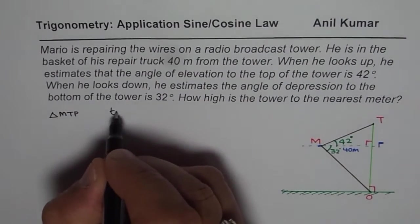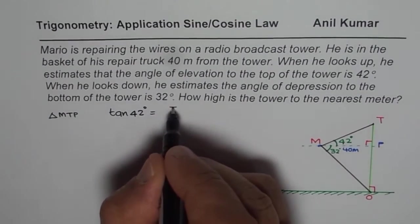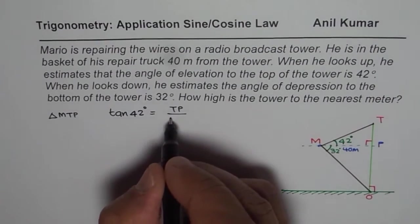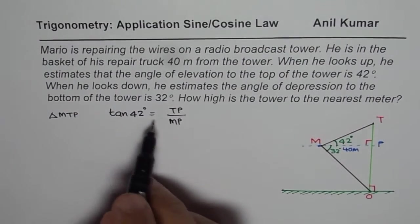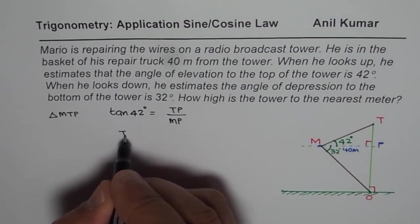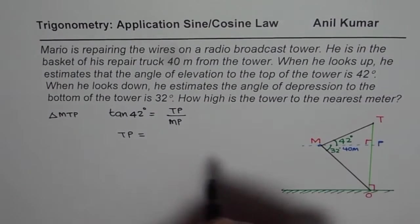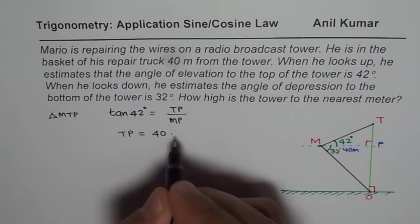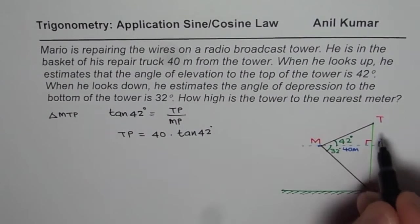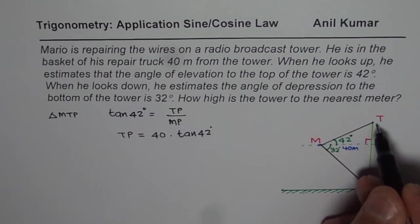So, we can write down tan of 42 degrees equals TP divided by MP. From here, we can calculate what TP is. We can write down TP equals MP, which is 40, times tan of 42 degrees. So, we can get the height of the building above Mario, which is TP.